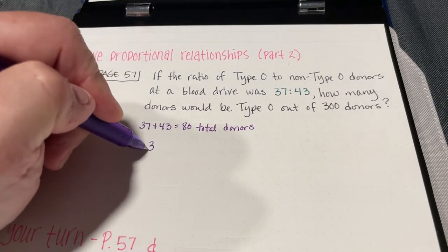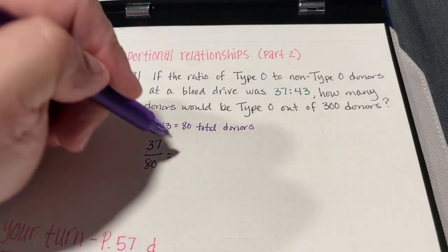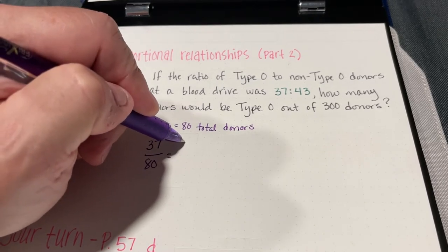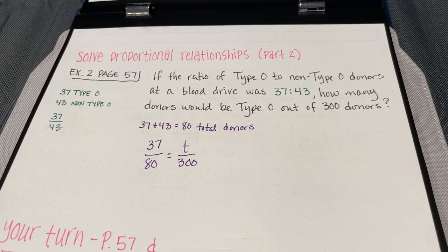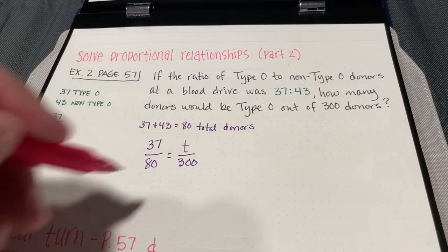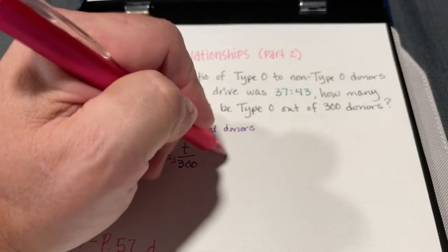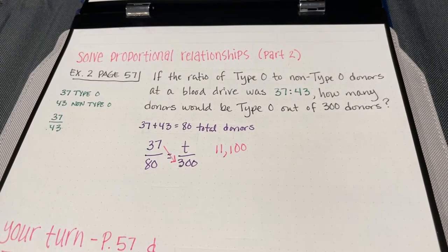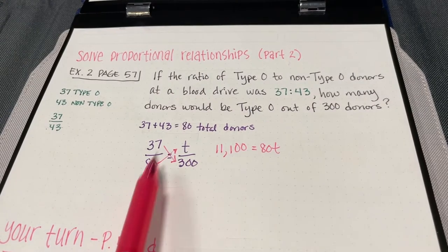So 37 out of 80 total donors were type O. We want to find how many would be type O out of 300 donors. We set this up as a proportion, then use cross products: 37 times 300 is 11,100, and that equals 80t.